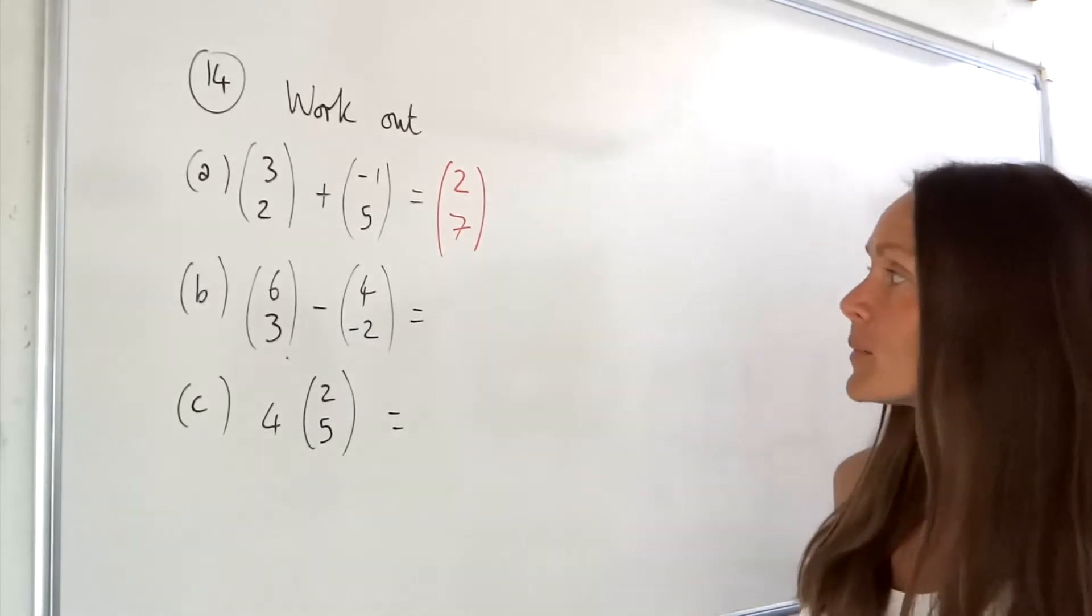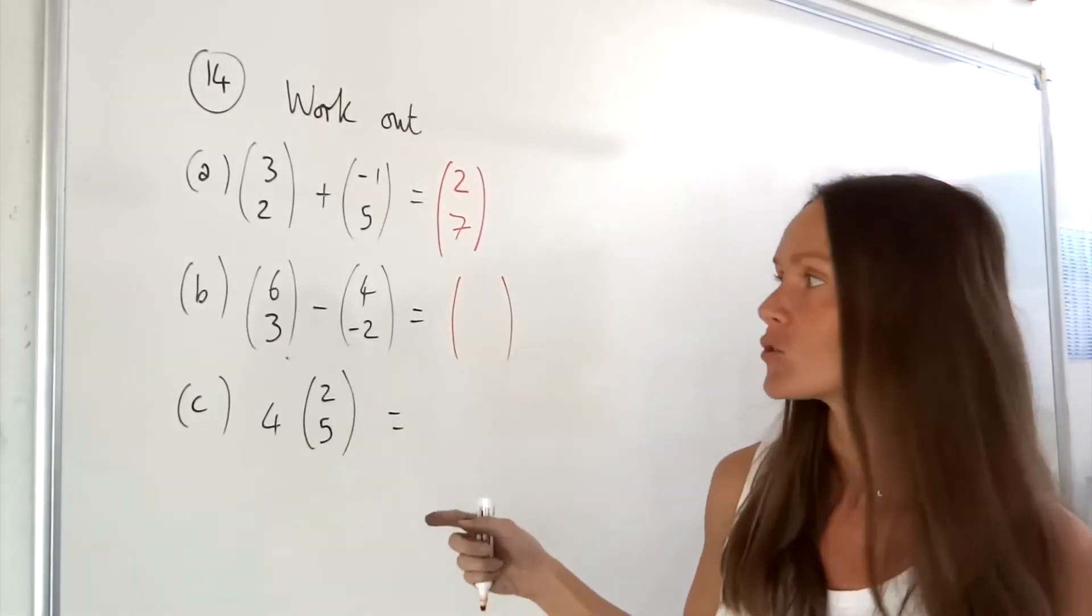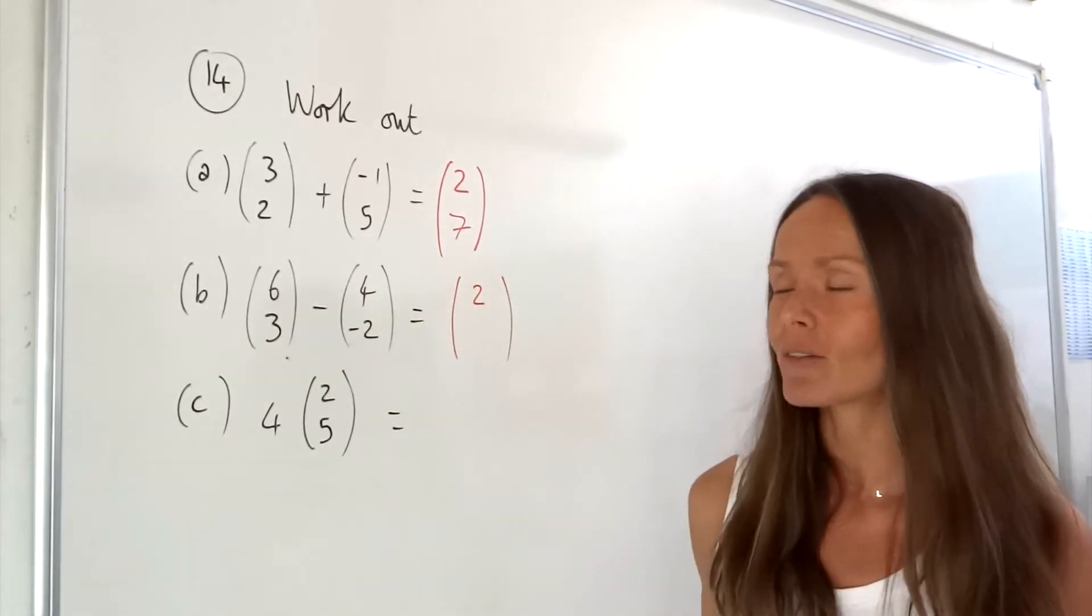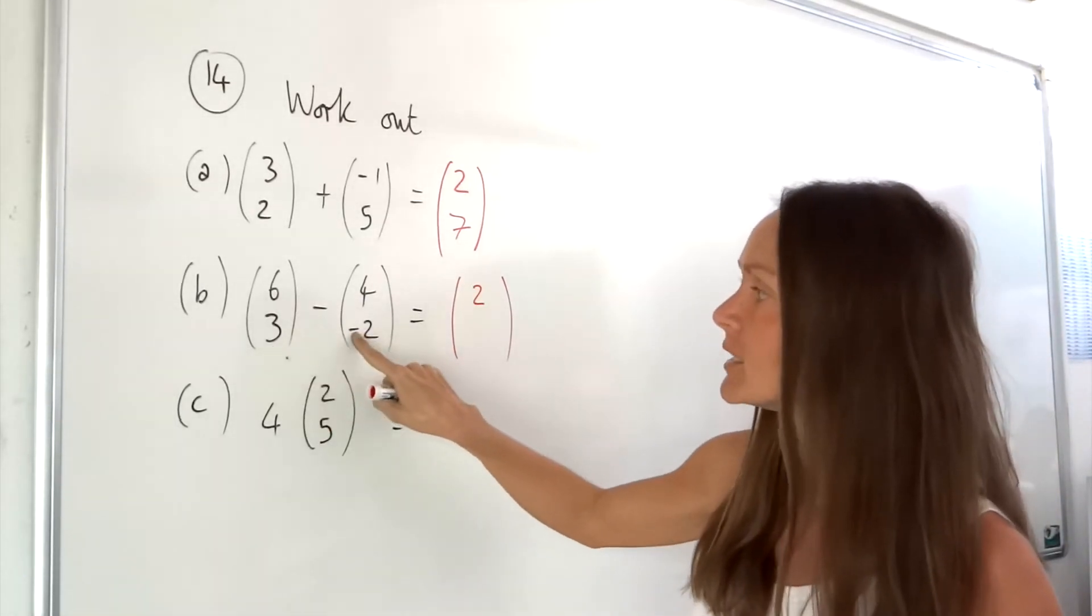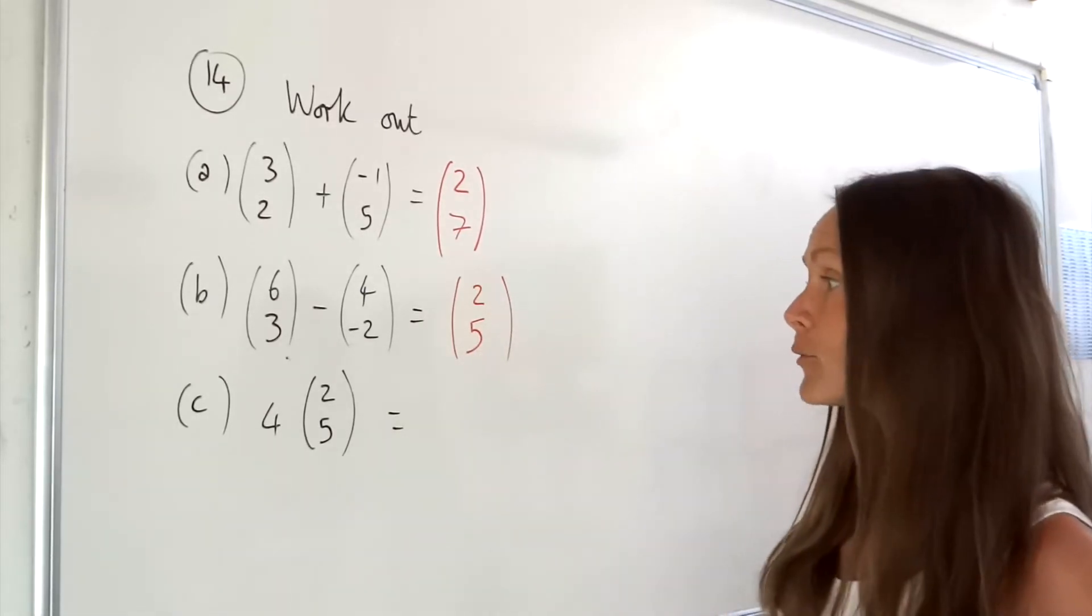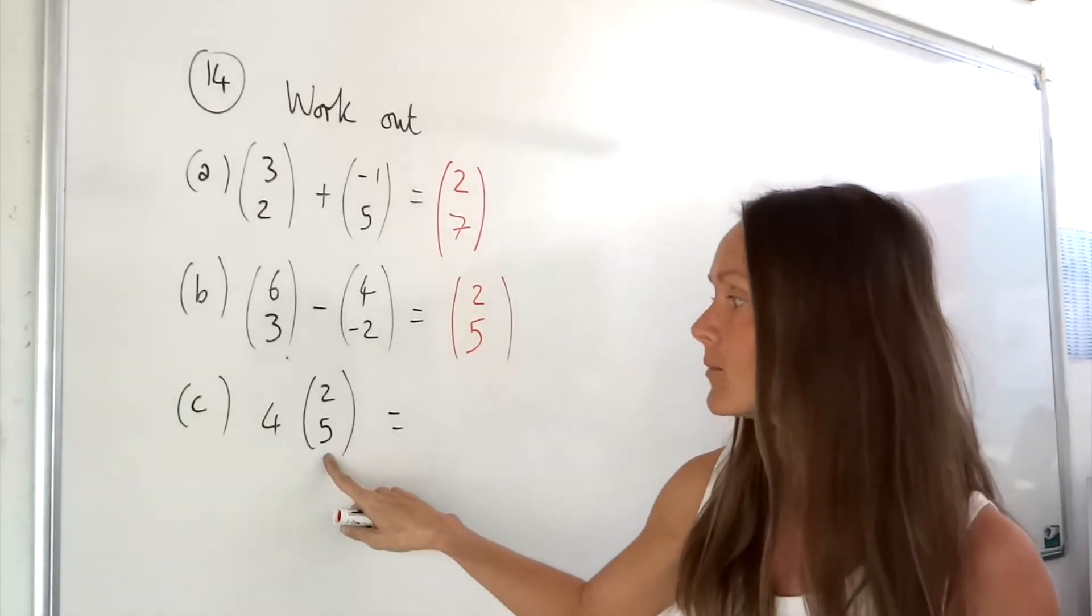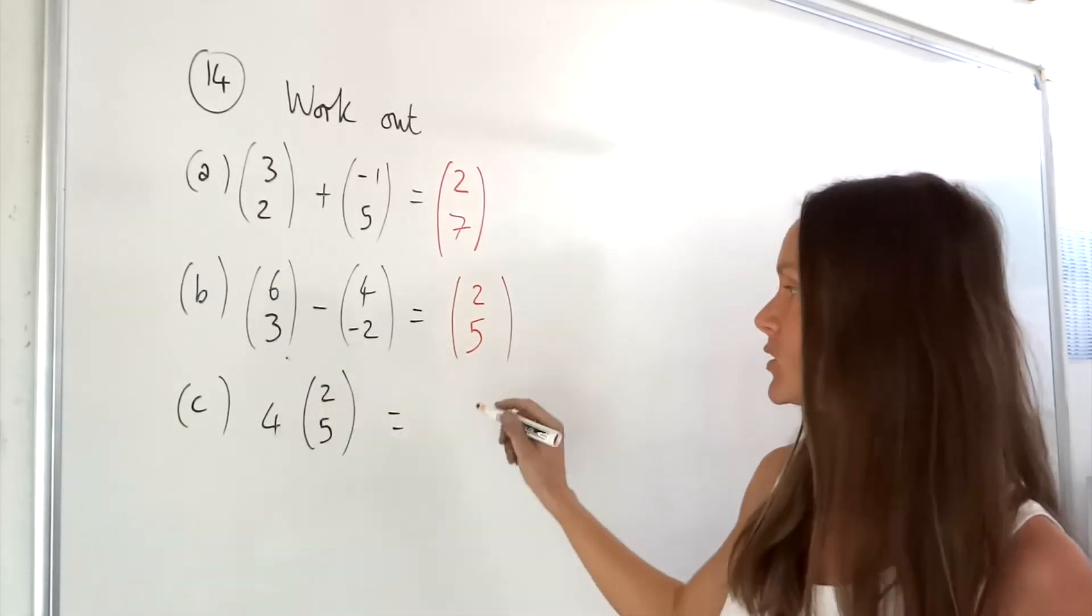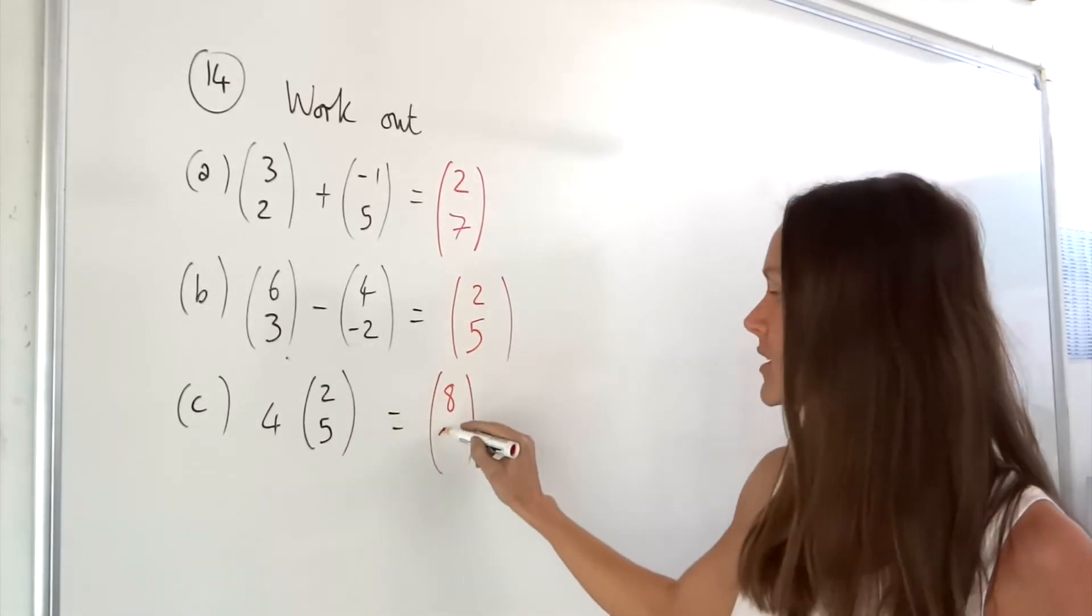In part b we have to subtract, so we're going to start by subtracting the top numbers. Six take away four is two. Then be careful underneath because you've got a double minus. Three minus minus two is the same as three plus two which is five. Finally in part c we have to multiply this column vector by the number four, so four multiplied by two is eight and four multiplied by five is twenty.